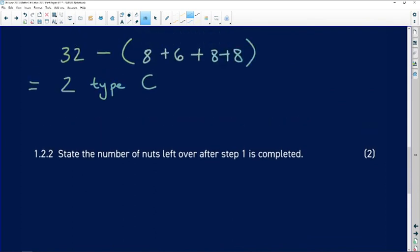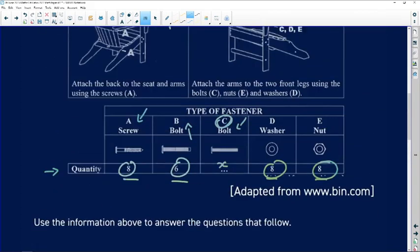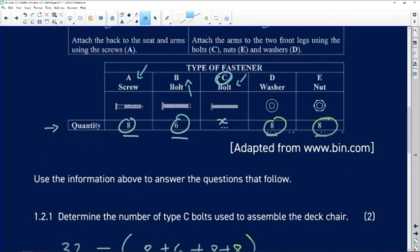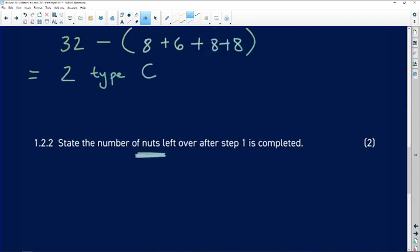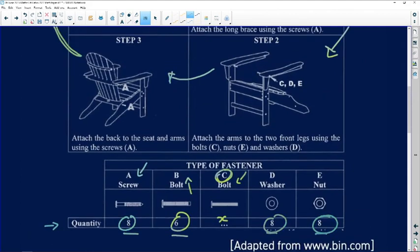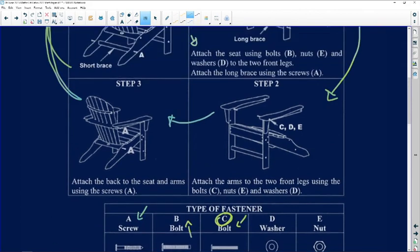State the number of nuts left over after step one is completed. Let's go and read step one because step one will tell us how many of them we need. So we need to know how many nuts left over after step one. Nuts in total we've got eight nuts in total.